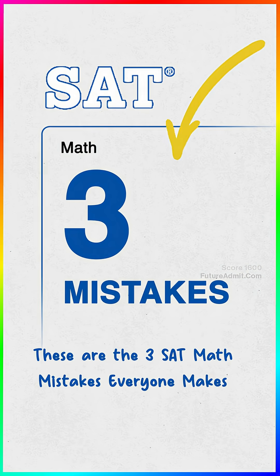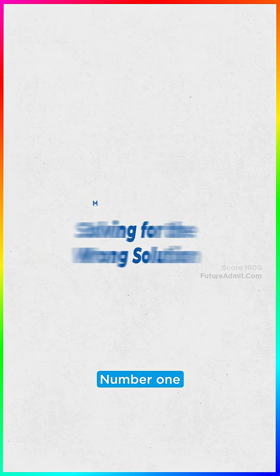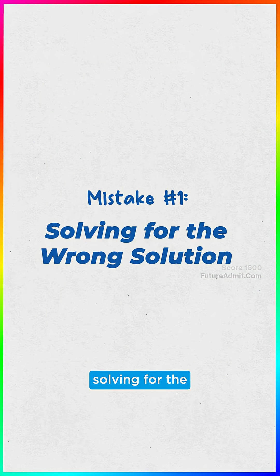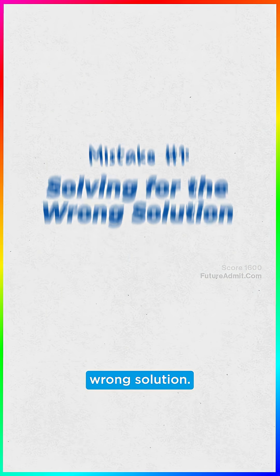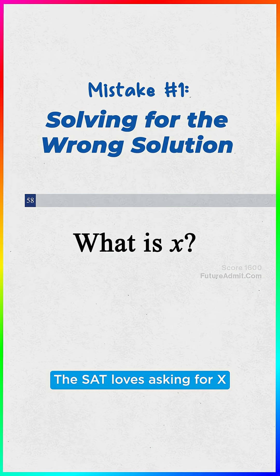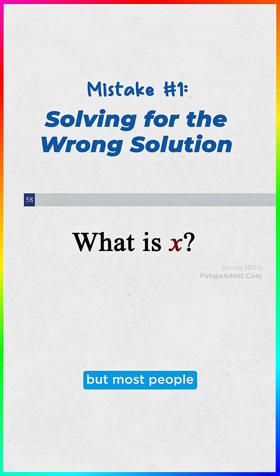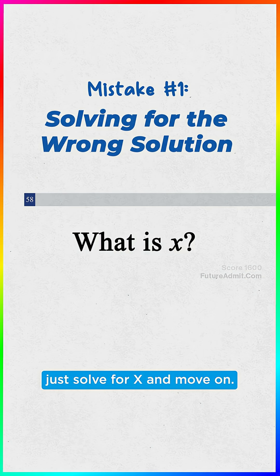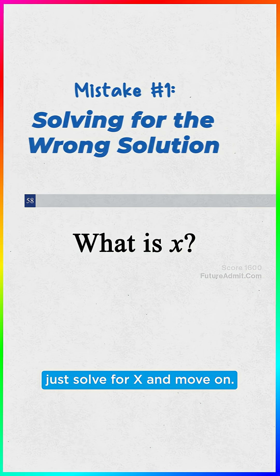These are the three SAT math mistakes everybody makes. Number one: solving for the wrong solution. The SAT loves asking for X-something, but most people just solve for X and move on.